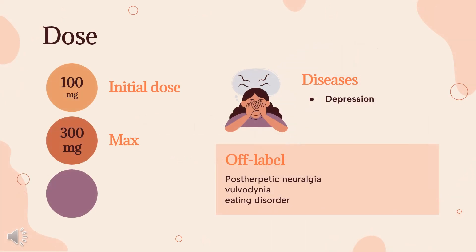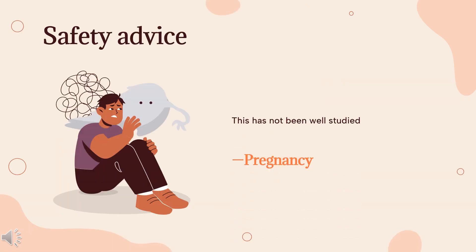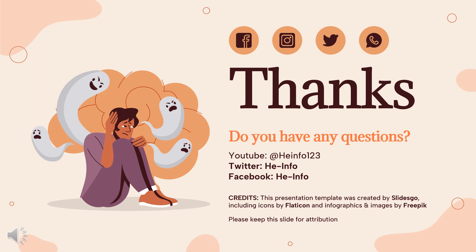Dose: For depression, 100–200 mg orally at bedtime or divided every 12 hours; up to 300 mg per day in severely ill patients. Off-label uses include post-herpetic neuralgia, vulvodynia, and eating disorders. Safety advice: It is possible that use of desipramine during pregnancy can cause temporary withdrawal symptoms in newborns soon after birth, though this has not been well studied.